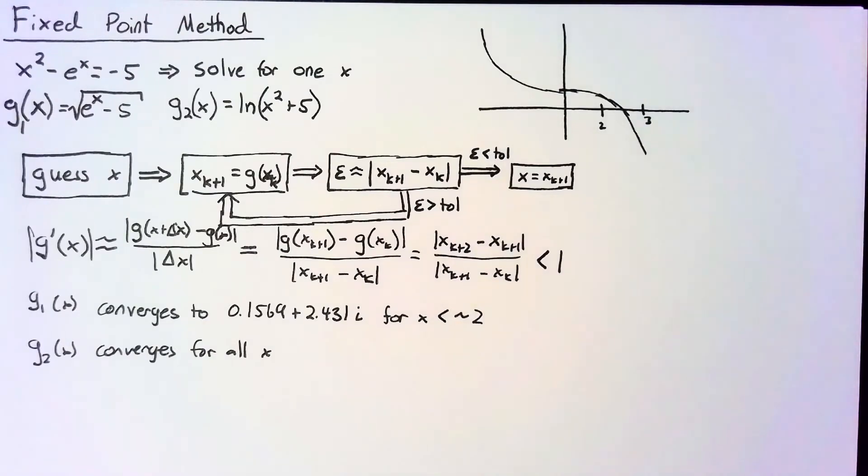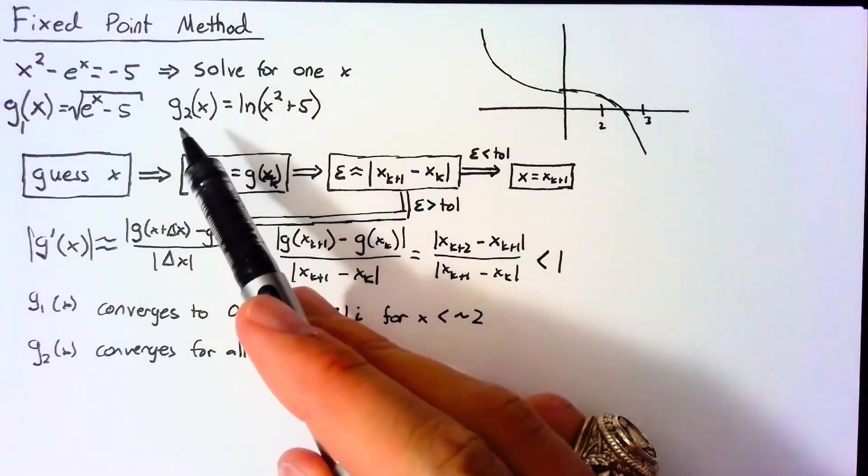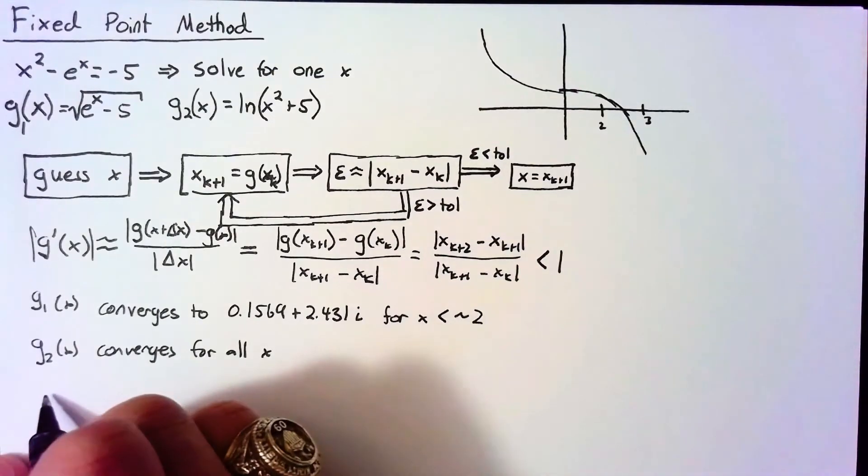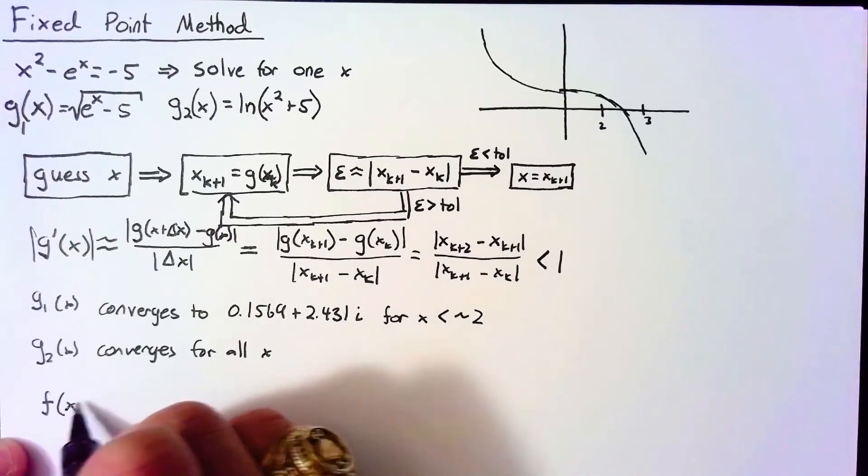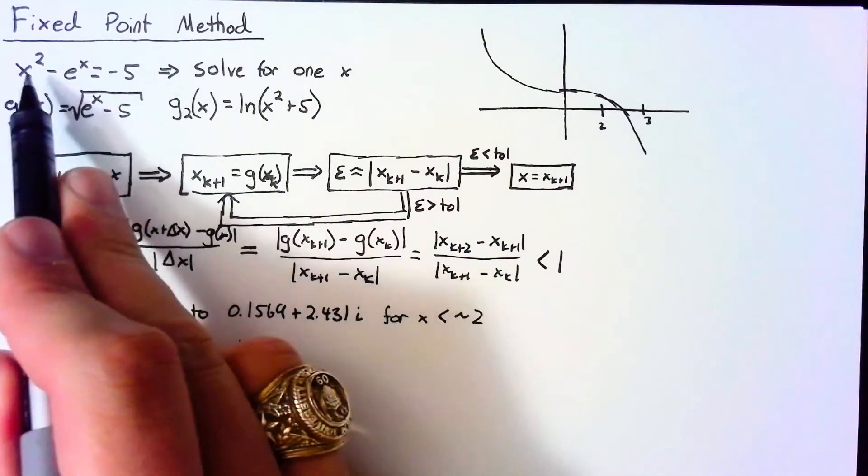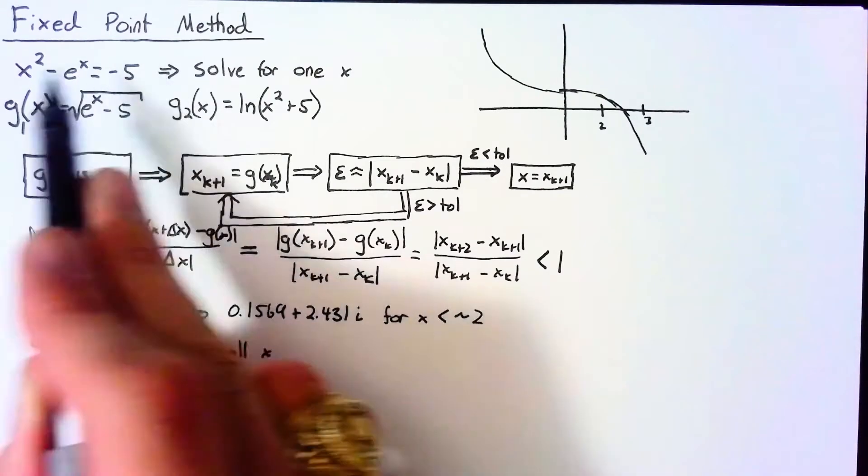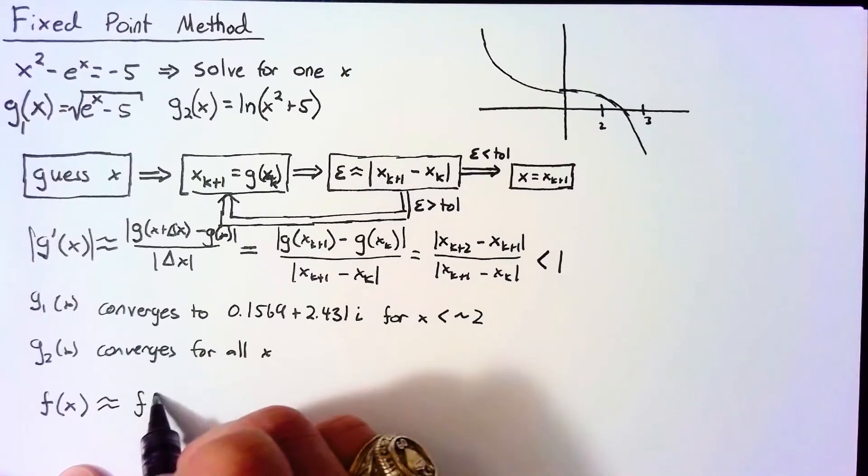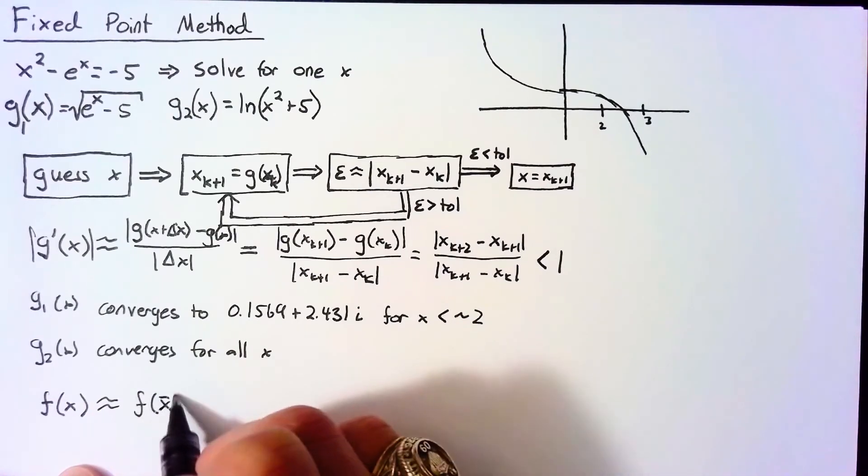So what we'd like to do is find a way to construct a pretty good g without just having to guess and check and see which one works well. And there is actually a very good way of doing that. So what we're going to do to start off is go look at the Taylor series for f(x), where f(x) here is x² - e^x + 5, right? Pushing everything to the left hand side.